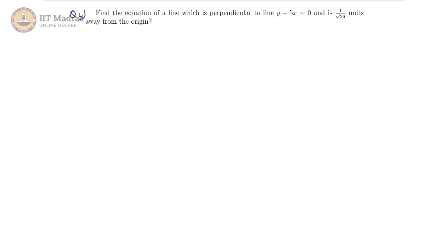For our fourth question, we want the equation of a line which is perpendicular to this line and is at this distance from the origin. From y minus 5x equals 0, we get y equals 5x.